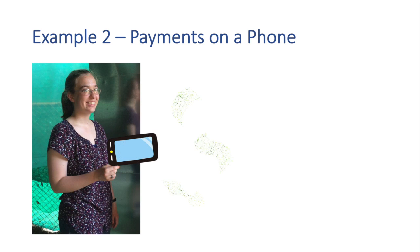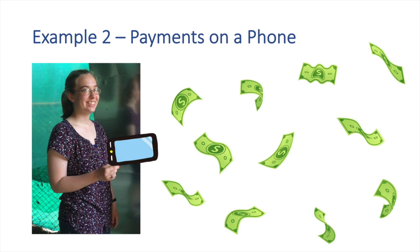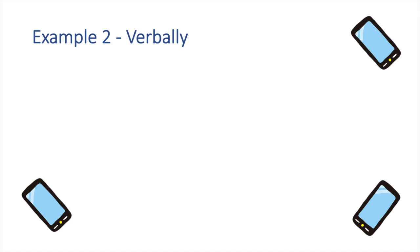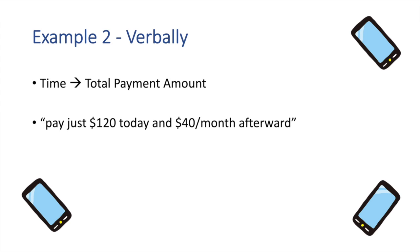All right, moving on to our second example, we are going to talk about payments on a phone. Just like Liz here, you might be excited to get a brand new smartphone, but you know that it can get pretty expensive. So exactly how much are you going to have to pay after a certain number of months? Well, let's take a look. For a real-life example like this one, describing the function verbally is the most logical first step. So this function is going to relate the time to the total payment amount you make towards your phone. Oftentimes, phone companies will say something like, pay just $120 today and $40 a month afterward. Another way to say that would be that there is a base payment of $120 plus a monthly payment of $40.